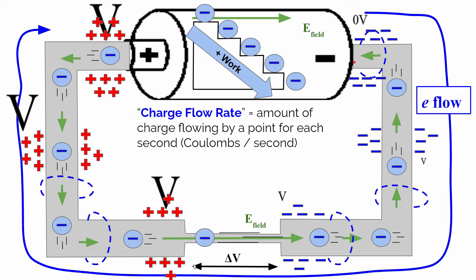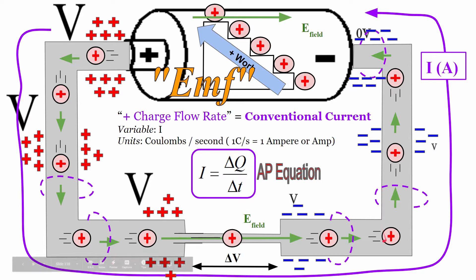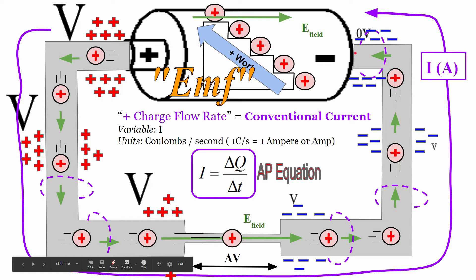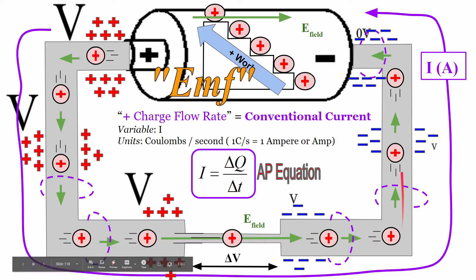We know that electrons move naturally from a low electric potential to a high electric potential, and the battery maintains this flow rate through the circuit. Even though electrons move from the negative side of the battery to the positive side, the convention for talking about movement of charges in a circuit is we imagine positive charges are the mobile charges. So we define current as the flow rate — the amount of charge that moves through a circuit each second — and current is conventionally defined as positive charges moving from the positive side of a battery through the wires all the way down to the negative side.